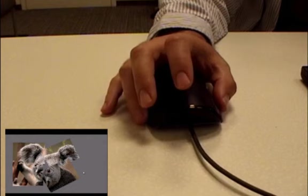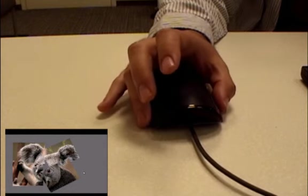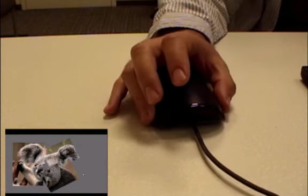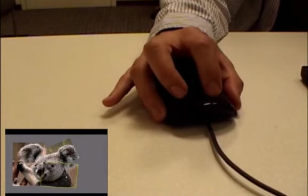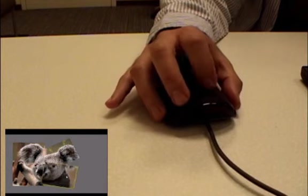The most common grip performed by our subjects uses the thumb and ring finger to hold the mouse. Interactions are performed with the index and middle fingers. Subjects tended to either use both fingers simultaneously or hold one finger stationary while moving the other.